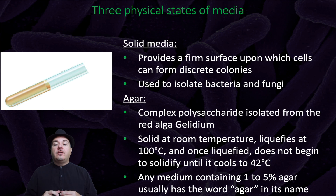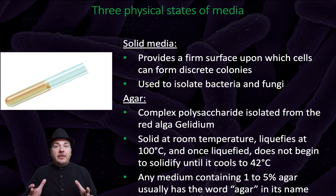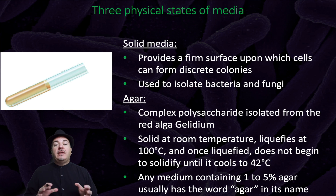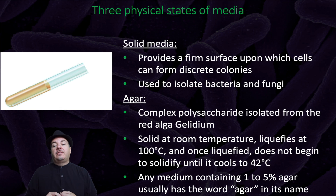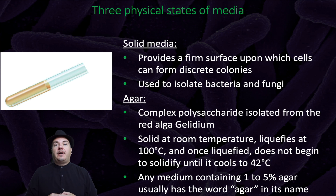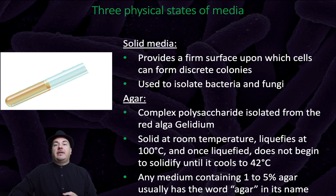Solid media provides a firm surface upon which cells can form discrete colonies, and is used to isolate bacteria and fungi. Agar is a complex polysaccharide isolated from red algae. It is solid at room temperature, liquefies at 100 degrees Celsius, and once liquefied, does not begin to solidify until it cools to 42 degrees Celsius. Any medium containing 1 to 5 percent agar usually has the word 'agar' in its name.